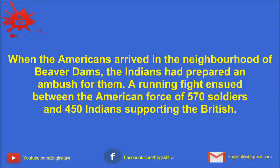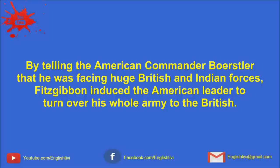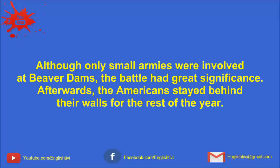Finally, one of the chiefs escorted her to British headquarters, and she was able to tell Fitzgibbon the American plan of attack. When the Americans arrived in the neighborhood of Beaver Dams, the Indians had prepared an ambush for them. A running fight ensued between the American force of 570 soldiers and 450 Indians supporting the British. At this point, Fitzgibbon arrived with 50 British regulars. Seeing the Americans disorganized and surrounded by the Indians, Fitzgibbon boldly demanded their surrender. By telling the American commander, Boetzler, that he was facing huge British and Indian forces, Fitzgibbon induced the American leader to turn over his whole army to the British. Although only small armies were involved at Beaver Dams, the battle had great significance. Afterwards, the Americans stayed behind their walls for the rest of the year.